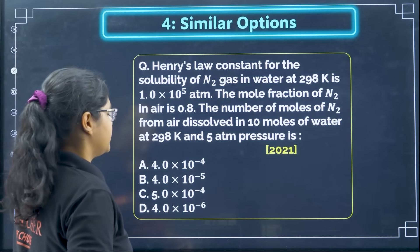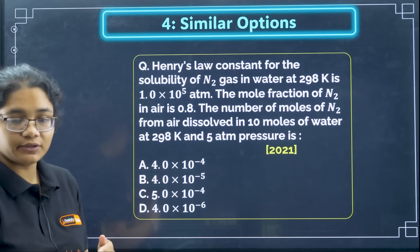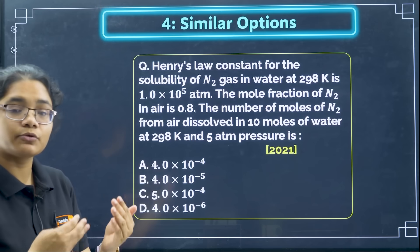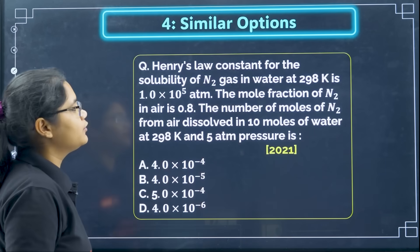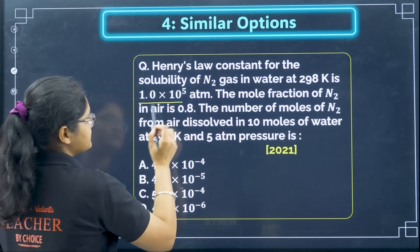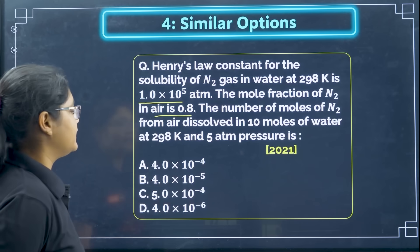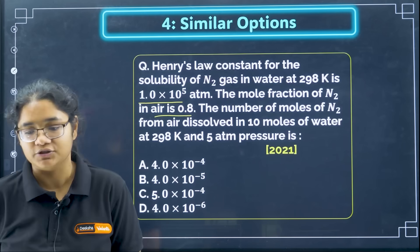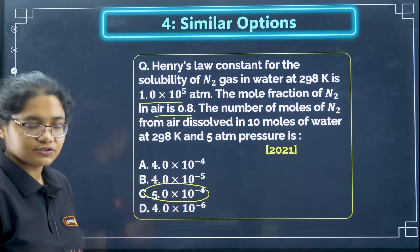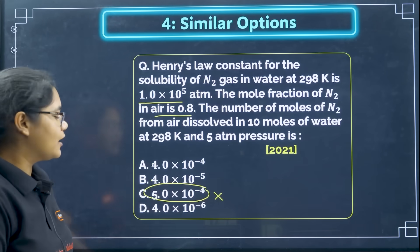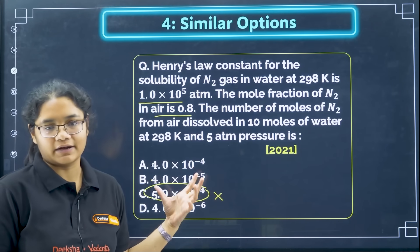Next method is your similar options. In exam what you can do is whenever you find in a question some of the options are very similar to each other, you can know that the answer will be from those similar options. For example if I see this question: Henry's law constant for the solubility of N2 gas in water at 298 Kelvin is this much, the mole fraction of N2 in air is this much and the number of moles of N2 from air dissolved in 10 moles of water at 298 Kelvin and 5 atm pressure is. Now if I see this question out of these all options this is a different option whereas rest 3 are similar options so you can eliminate this option. Now you can know one option is definitely eliminated, after that you can do the calculation and find the nearest answer, correct one, clear.